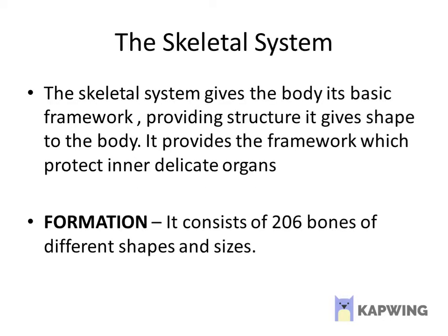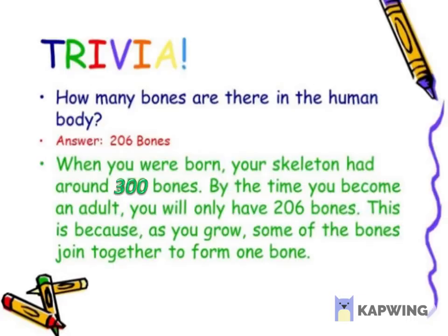The next topic is the skeletal system. The skeletal system gives the body its basic framework. It provides structure and shape to the body, and it provides the framework which protects the inner delicate organs — it protects our heart, brain, and various organs of our body. The skeletal system consists of 206 bones of different shapes and sizes. There are 206 bones in the human body.